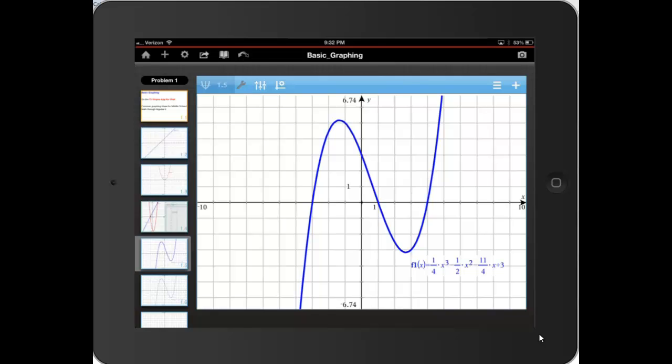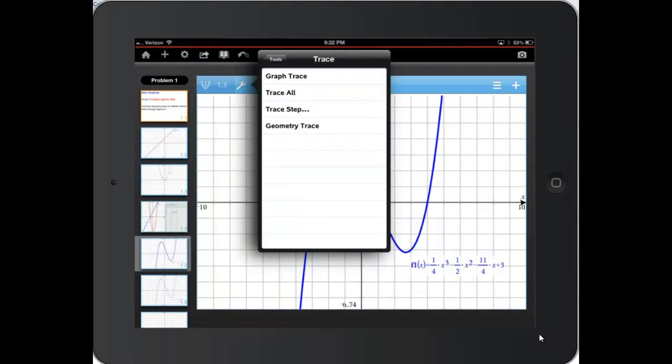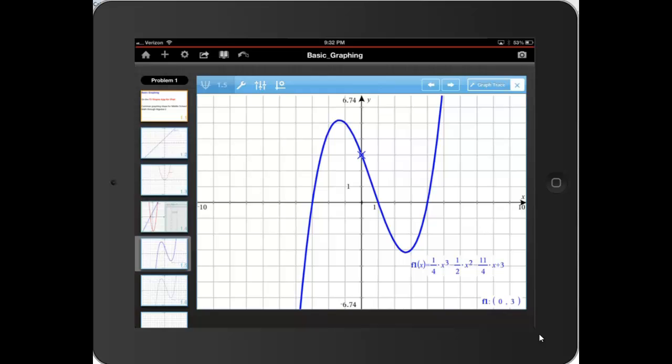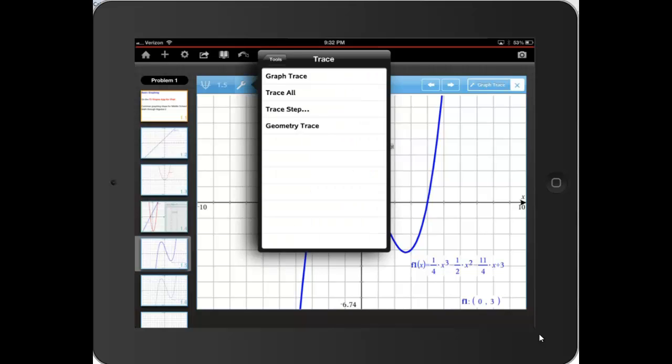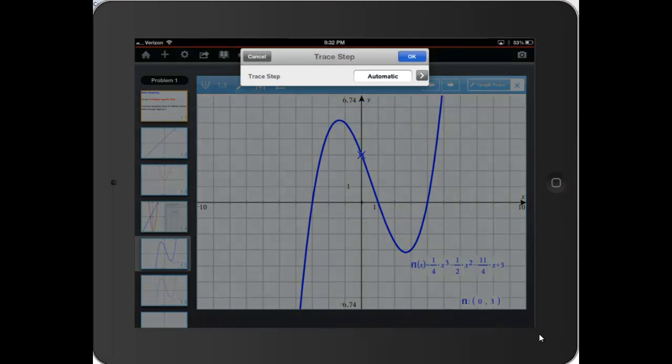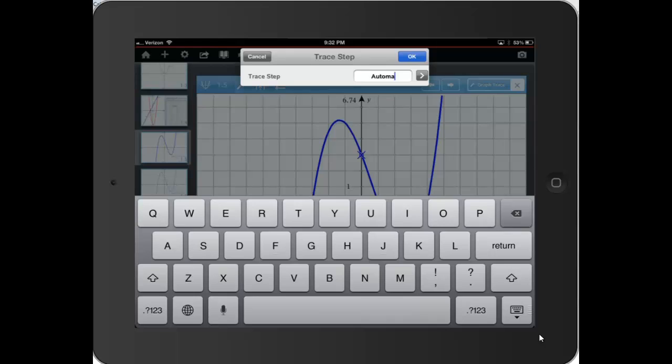I entered a cubic equation so that we could trace. So I'll go to trace, graph trace. And you'll notice in the lower right hand corner you'll see the coordinates. And notice it stopped at the zero which is kind of neat. So I think I'm going to go back and also show you how I can change the trace step. The automatic looked like it was about .3. And let's make it say 0.25. Not that there's anything special about that.